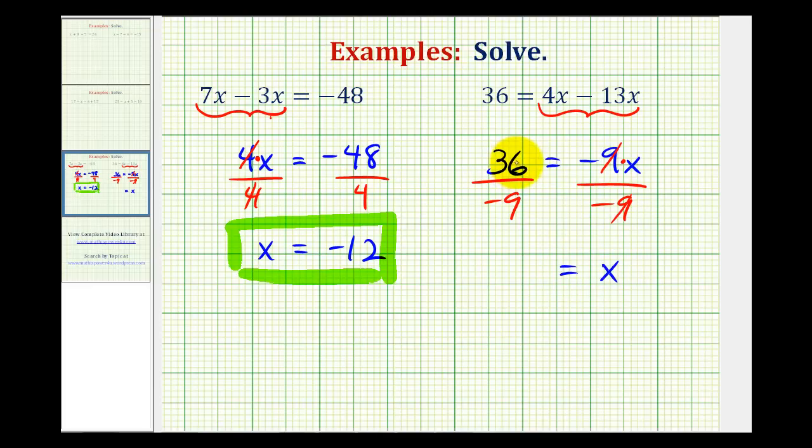On the left we have positive 36 divided by negative 9, which is equal to negative 4. But instead of leaving this as negative 4 equals x, this is usually reversed, so it reads x equals negative 4, which is our solution.